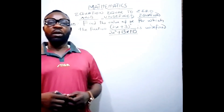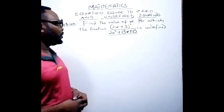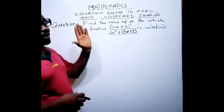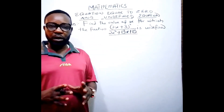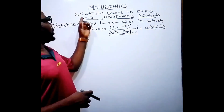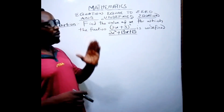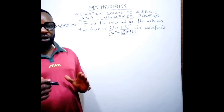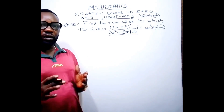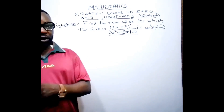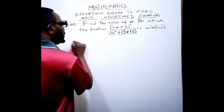Hi there y'all, welcome to this lecture. I have a topic we want to deal with here, which we have a question under. The topic is equation equal to zero and undefined equation. I want to quickly run through it for your understanding. We have a full lecture in our other class.